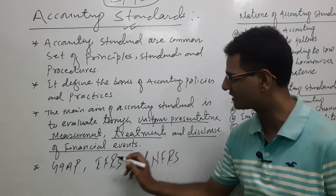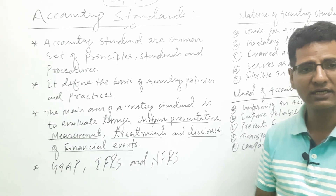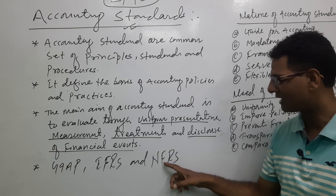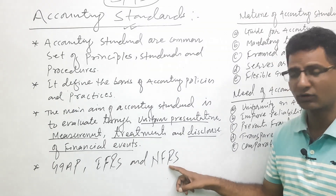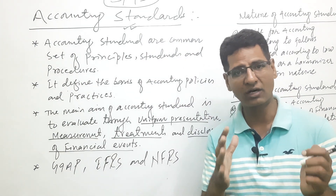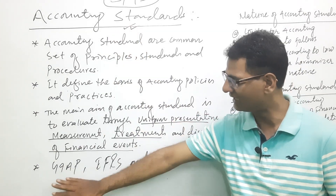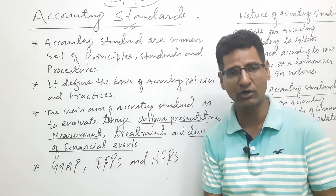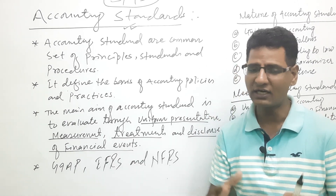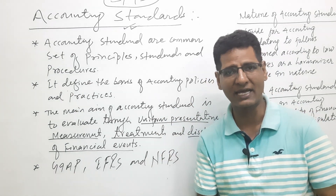Accounting standards are based on accounting norms. In the present case, Nepal also follows Nepal Financial Reporting Standard (NFRS). On the other hand, the United States of America follows GAAP. Each country has its own accounting standards, its own norms, its own values, its own format, and its own calculation mechanism.